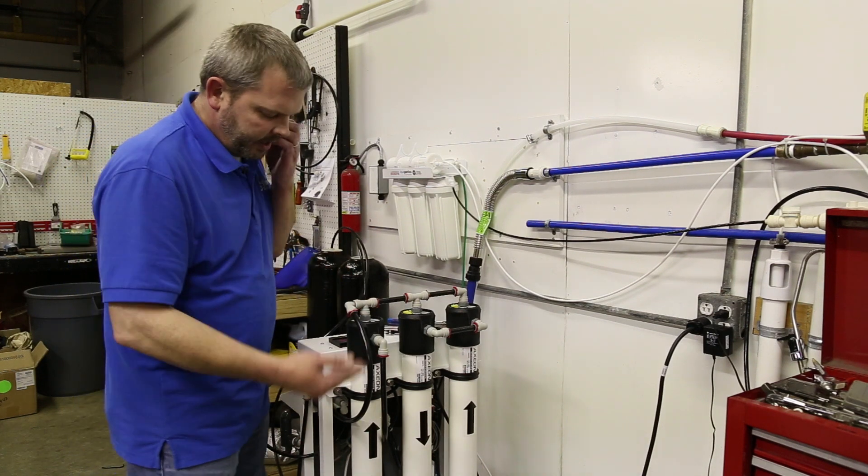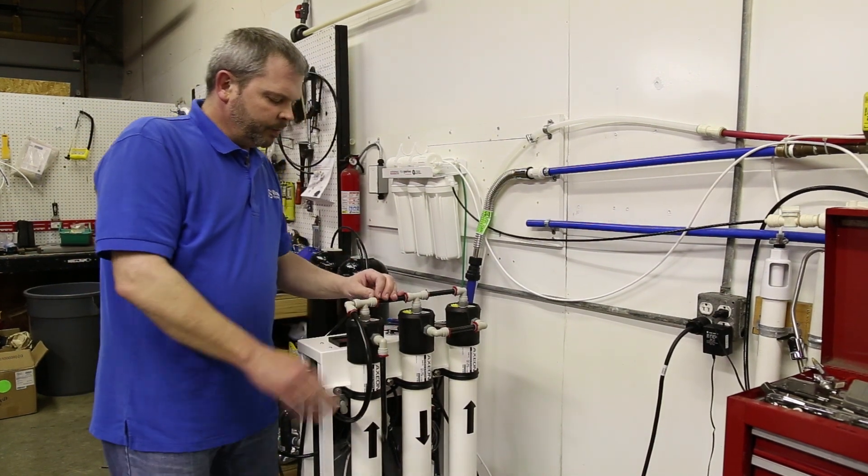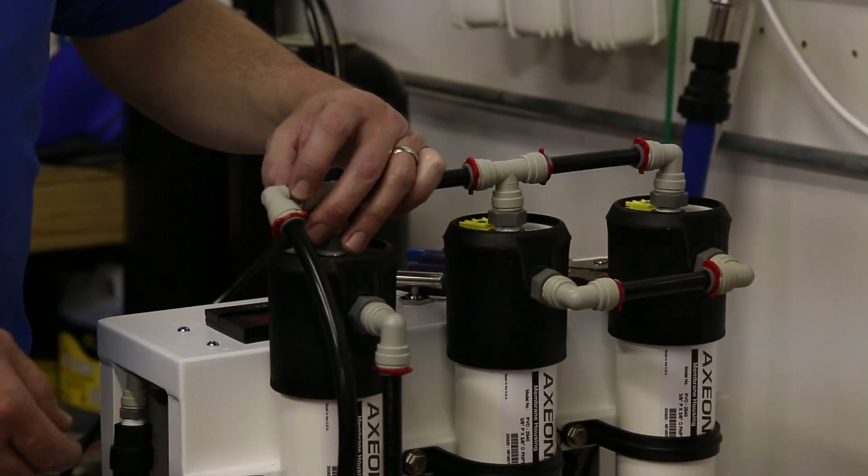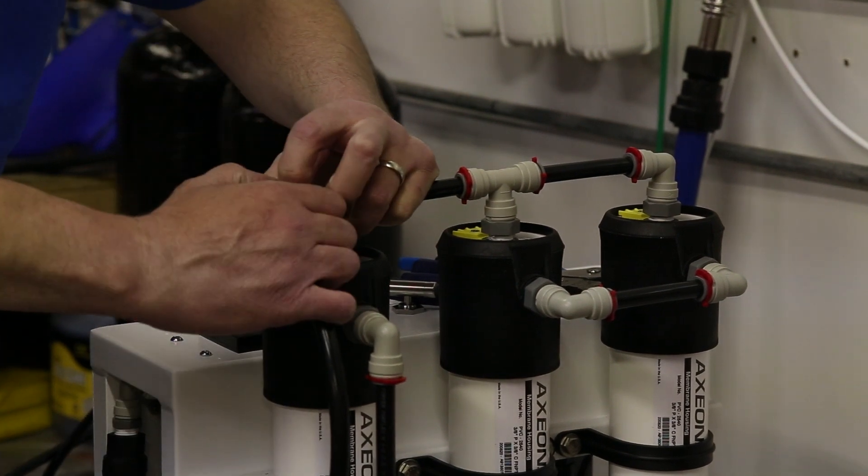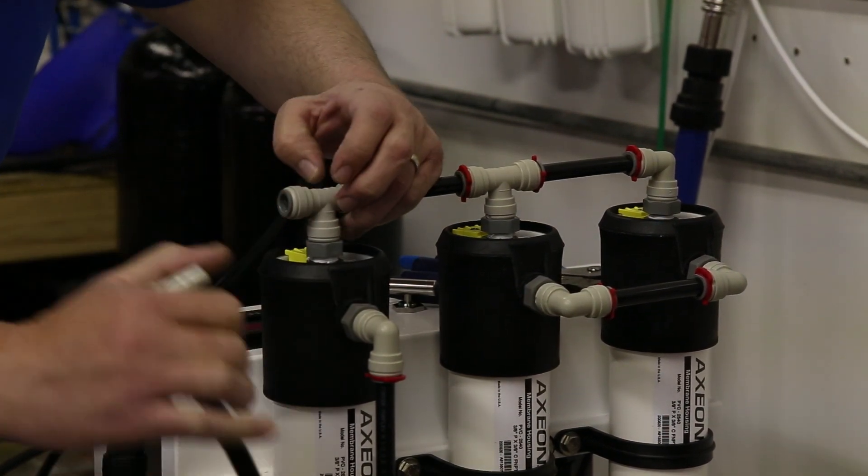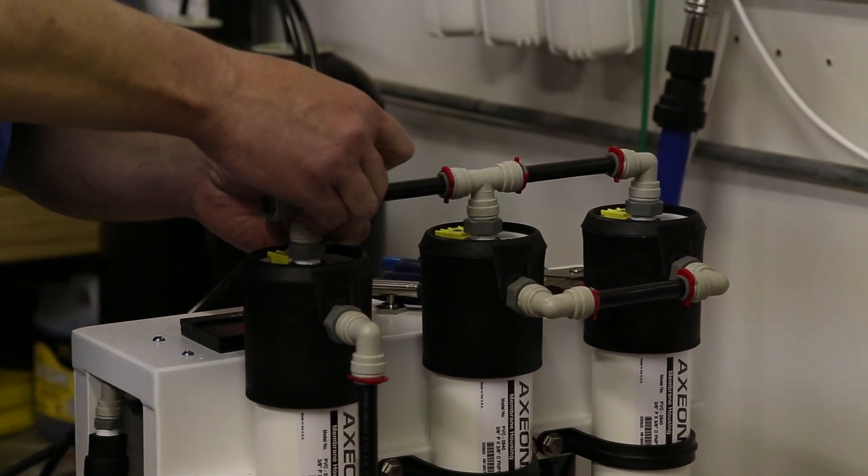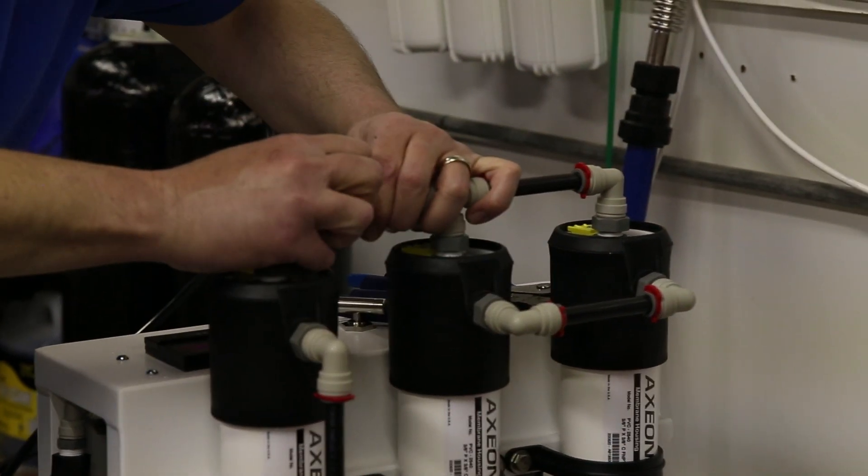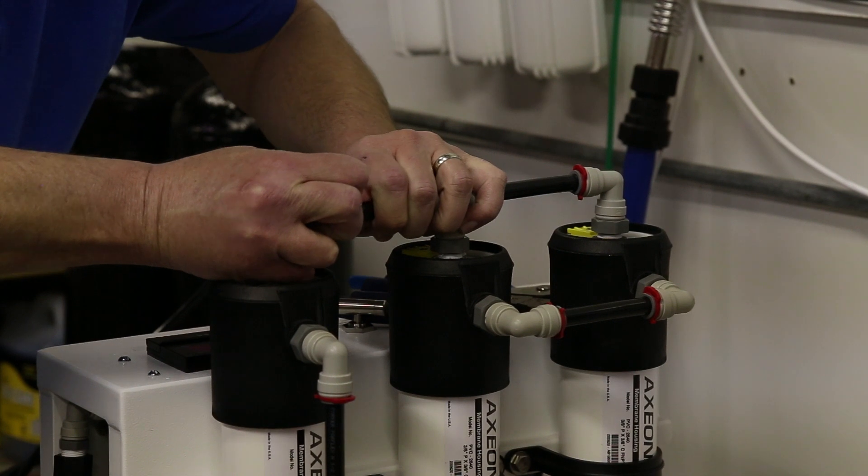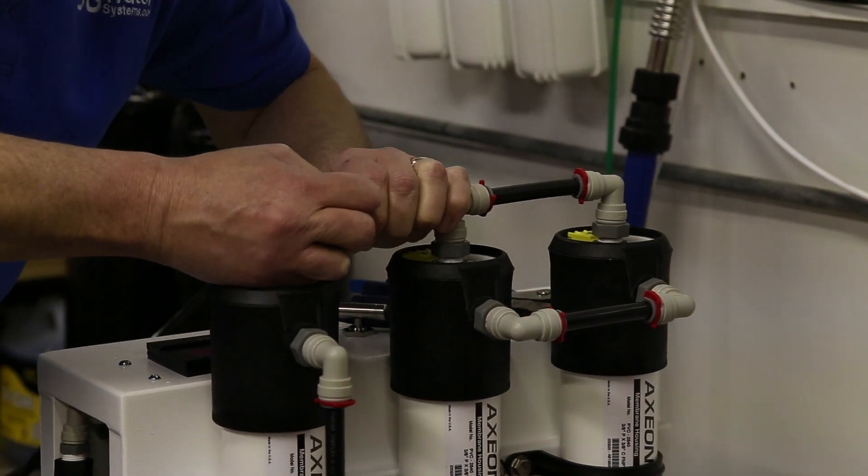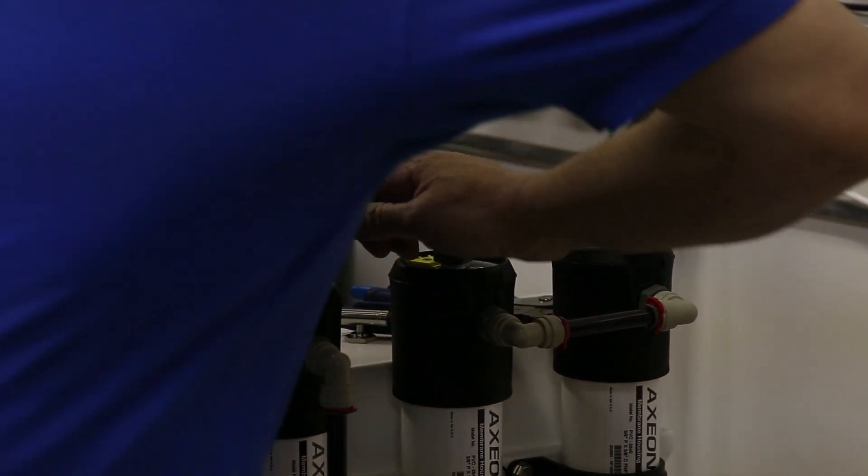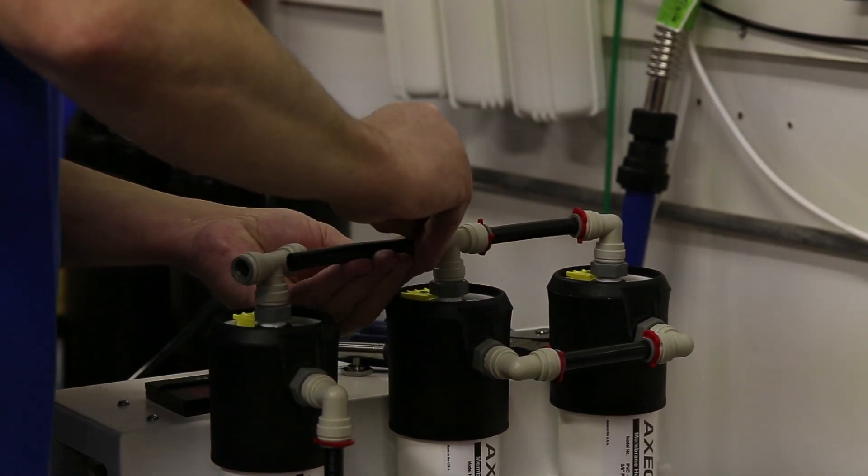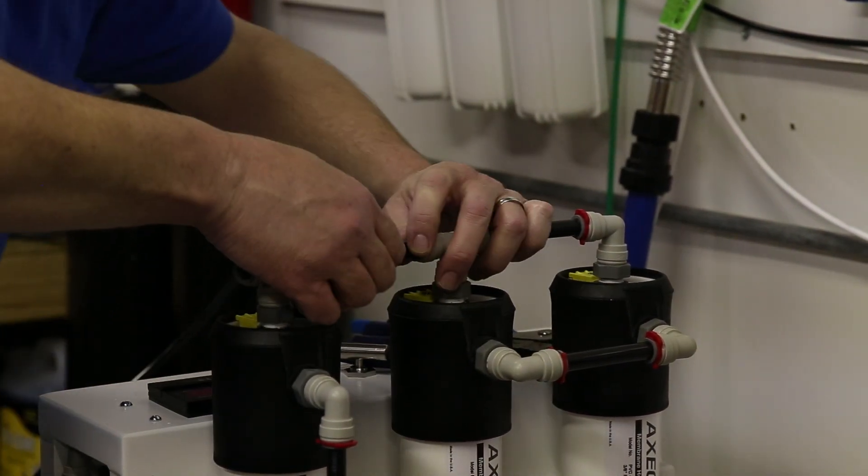This particular unit uses these John Guest speed fittings where you're just going to push in on the collet and hold in on it, then you can pull the lines right out. They also have these locking clips on here, pop those off, push in the collet and work it out. I'm going to take this tubing out of the way.